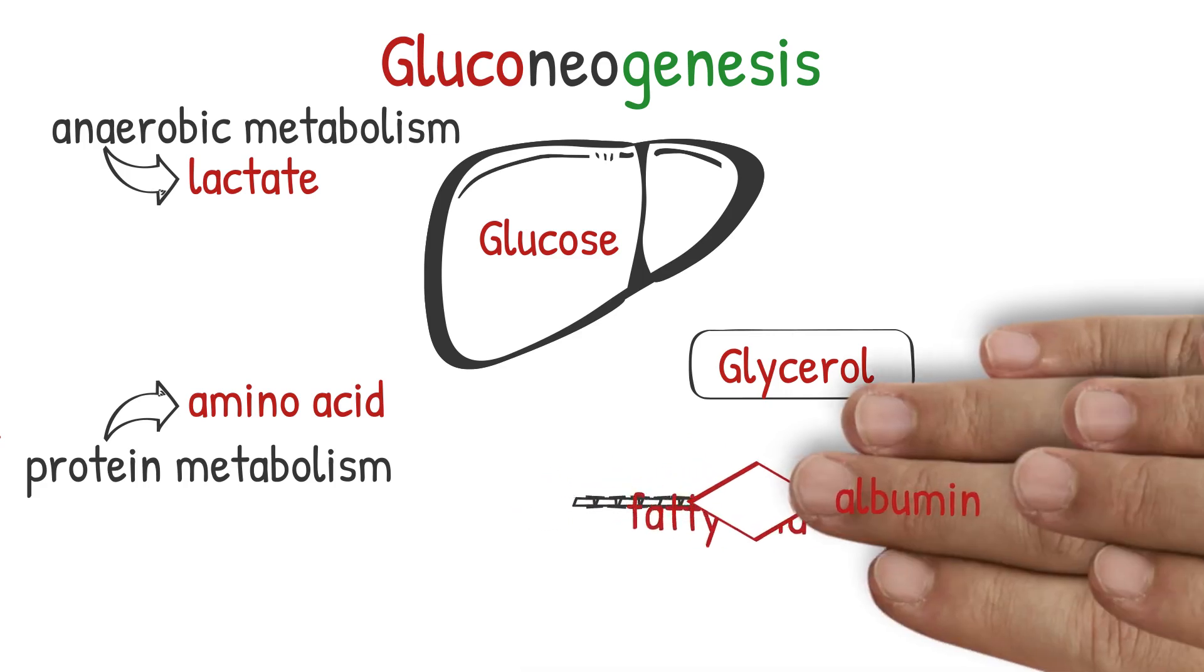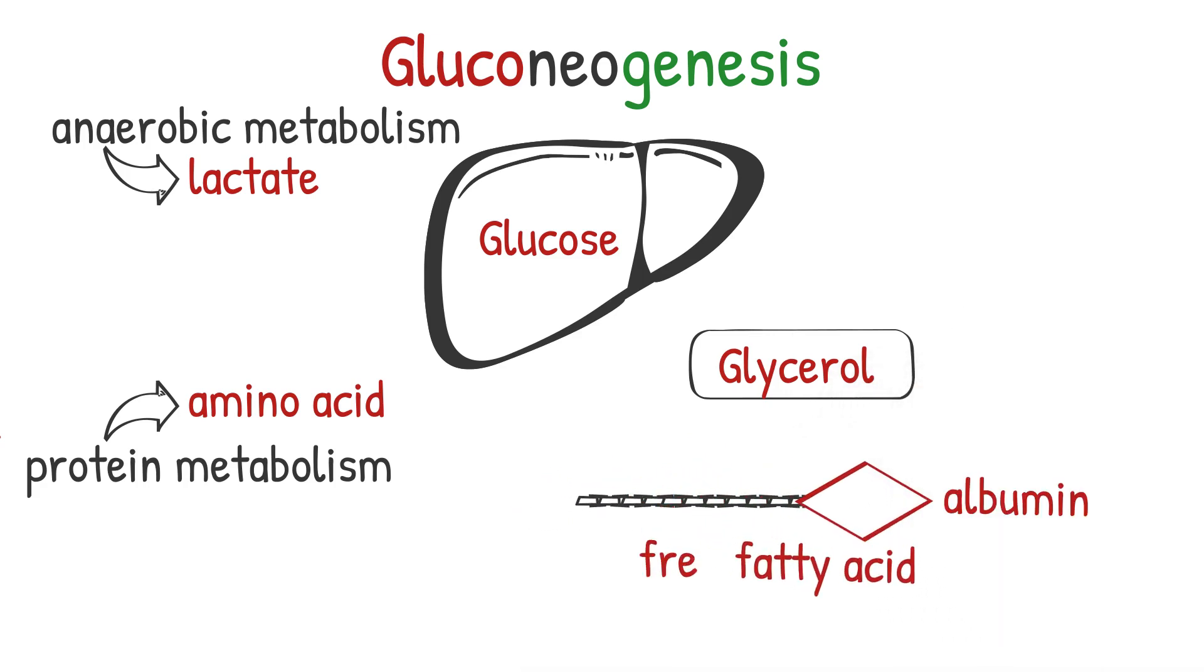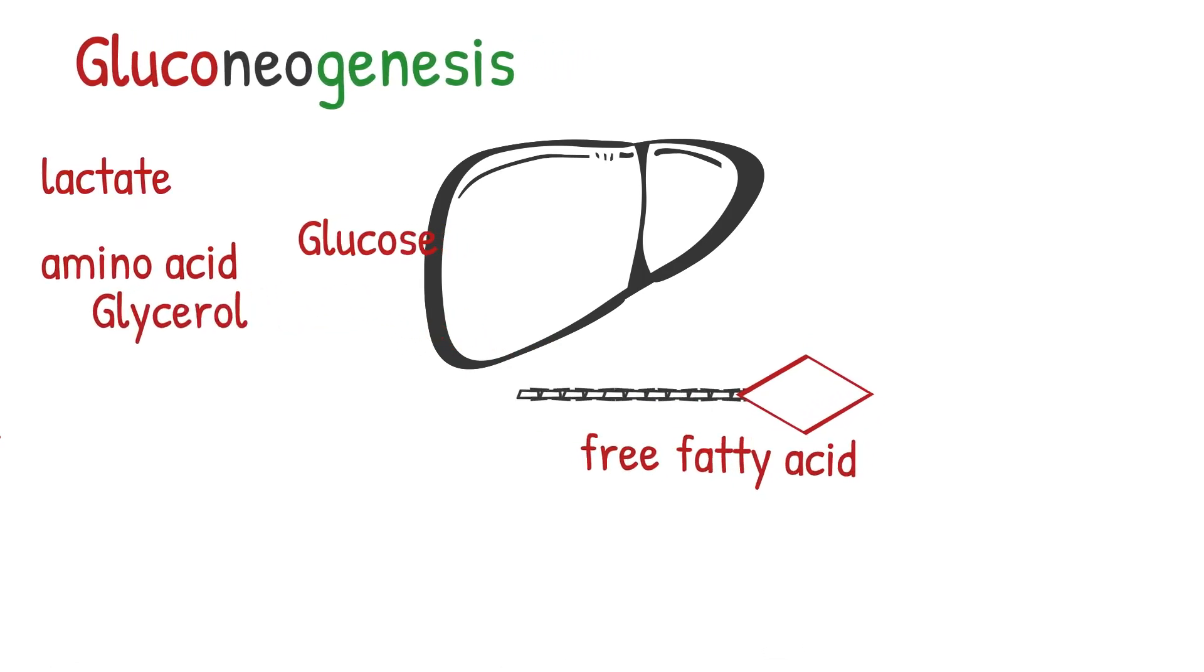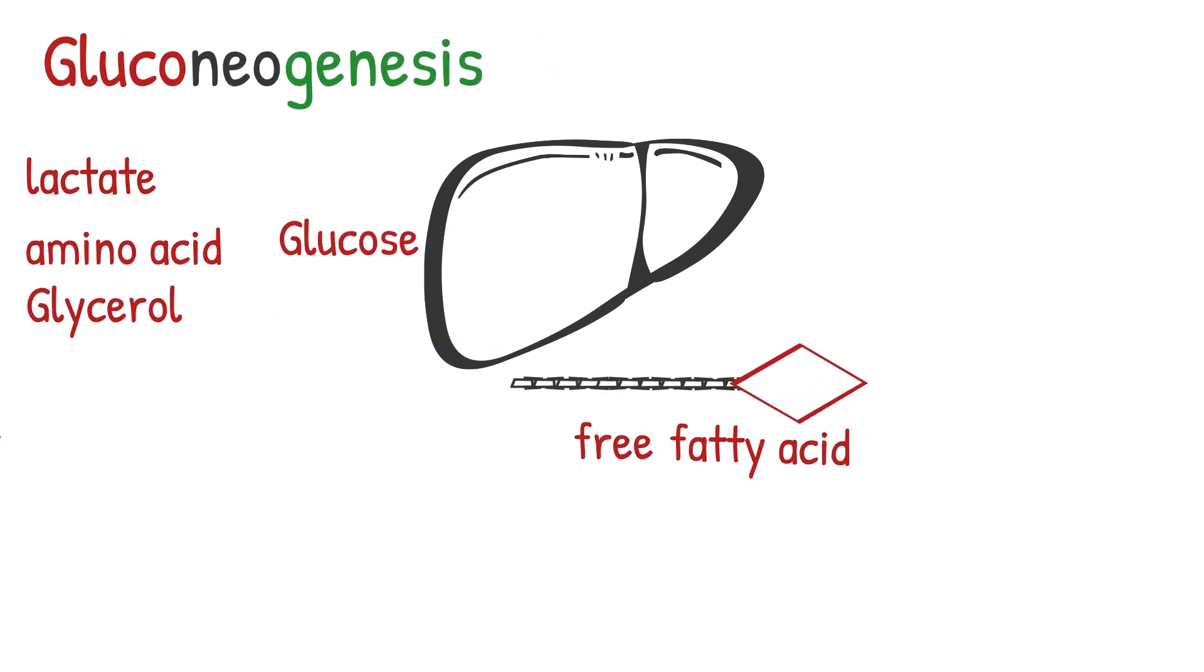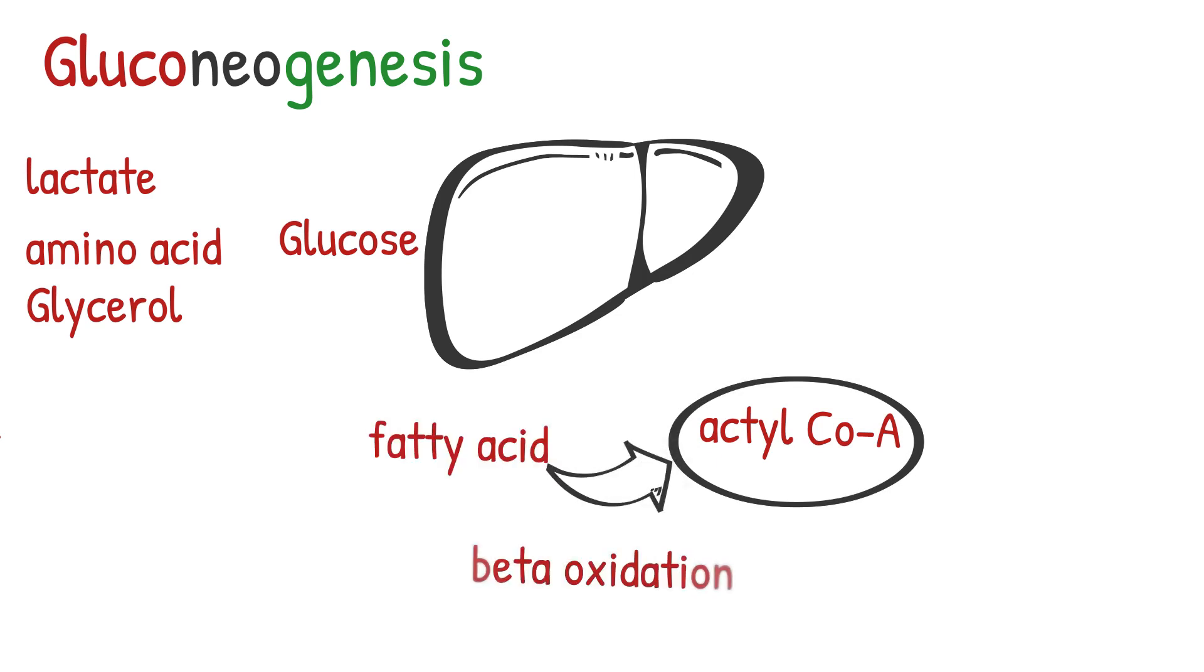Fatty acids are carried by the albumin proteins in blood circulation to all the cells in the body. All cells except the brain can use this fatty acid as a source of energy by converting it to acetyl-CoA, also known as beta-oxidation.